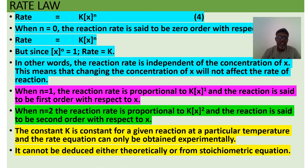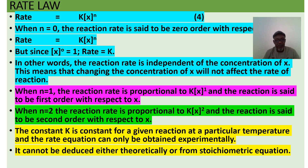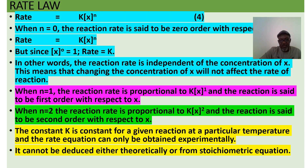For rate law, consider equation 4: rate = k[X]ⁿ. When n = 0, the reaction is zero order — since anything raised to power zero equals one, the rate equals the rate constant k. This means the reaction rate is independent of the concentration of X; changing the concentration of X will not affect the rate.